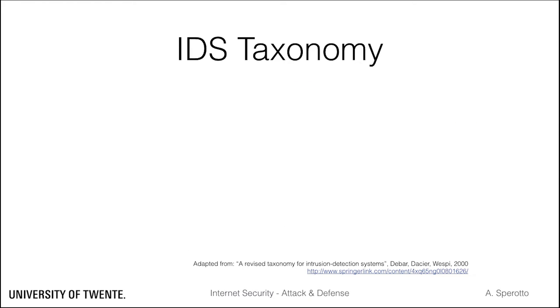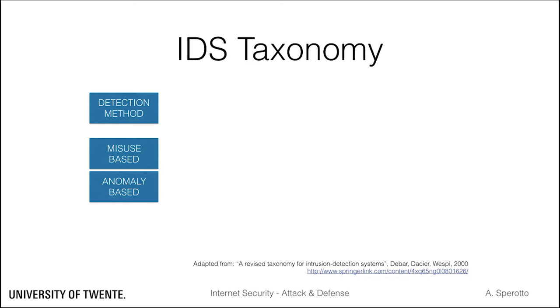An IDS can be described based on several characteristics, which we will define as a taxonomy. The one we use in this course includes the following. First, the detection method, which describes how the detection engine works.